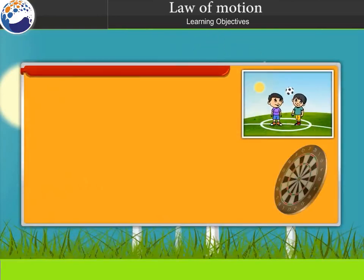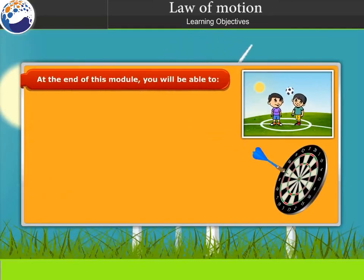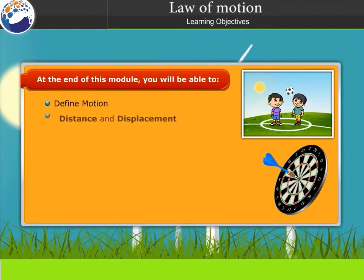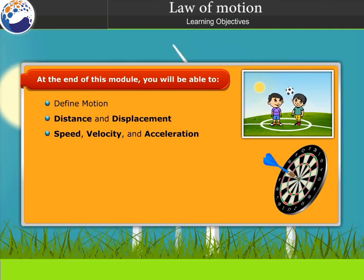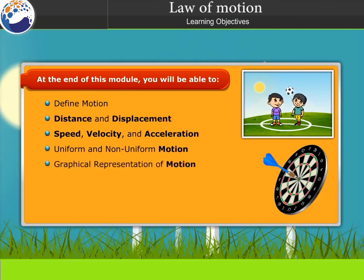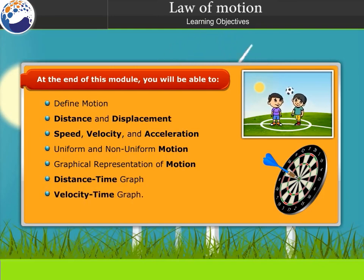Learning Objectives. At the end of this module, you will be able to define Motion, Distance and Displacement, Speed, Velocity and Acceleration, Uniform and Non-Uniform Motion, Graphical Representation of Motion, Distance-Time Graph, and Velocity-Time Graph.